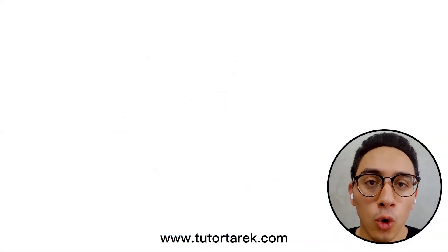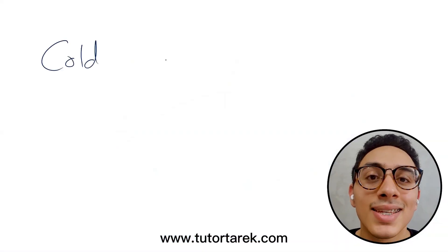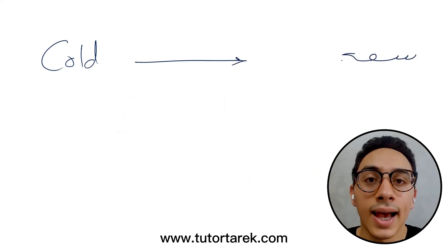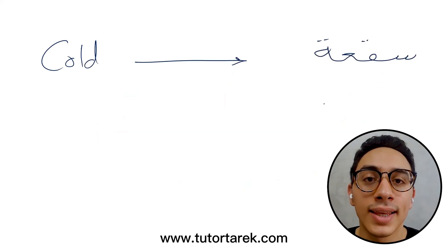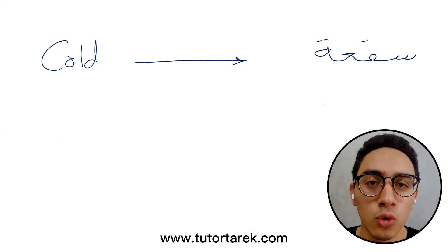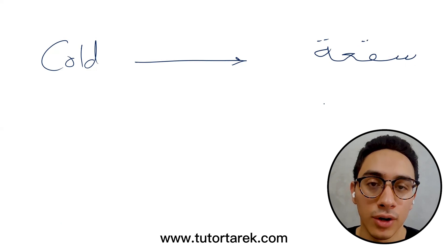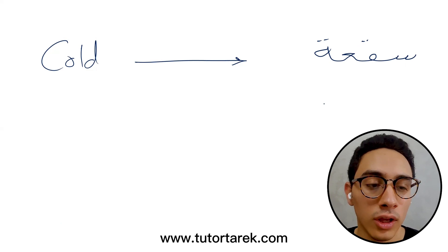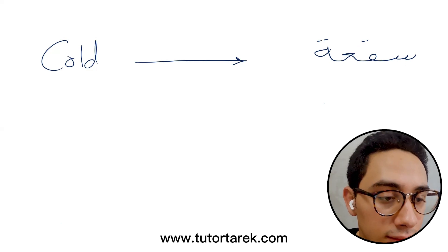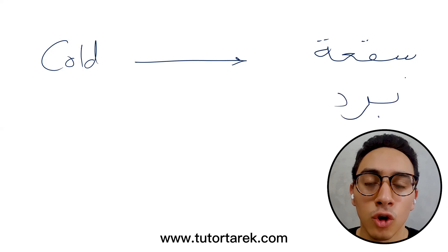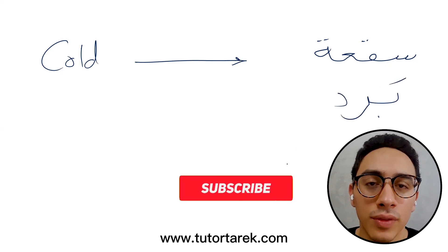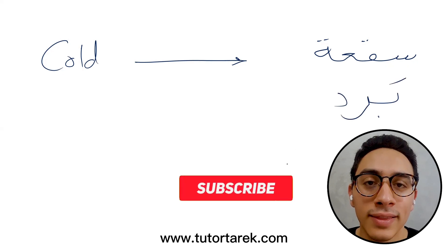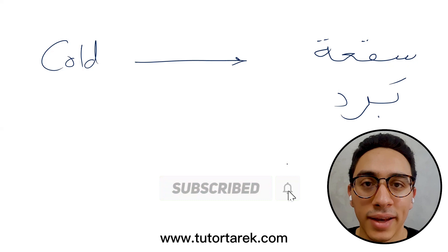Let's learn how to say 'cold' in Arabic. 'Sa-a' means cold, so you can say 'El-Gaw Sa-a' — it's cold today. We can also use 'Berd' — Berd also means cold. You can say 'El-Gaw Berd' or 'El-Dinya Berd il-Nahar-Da.'